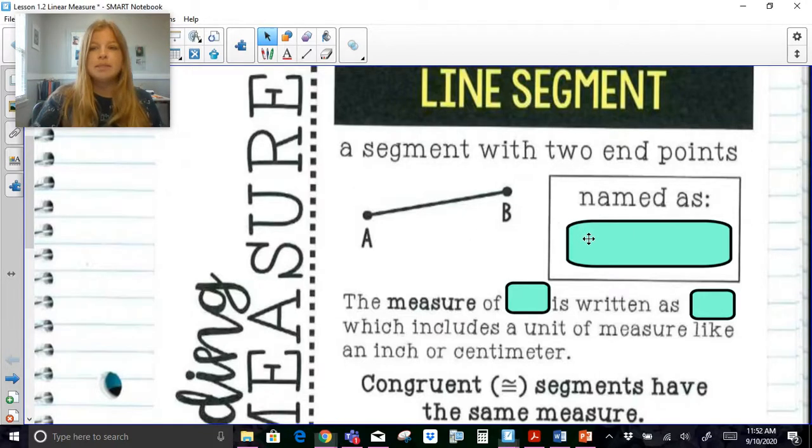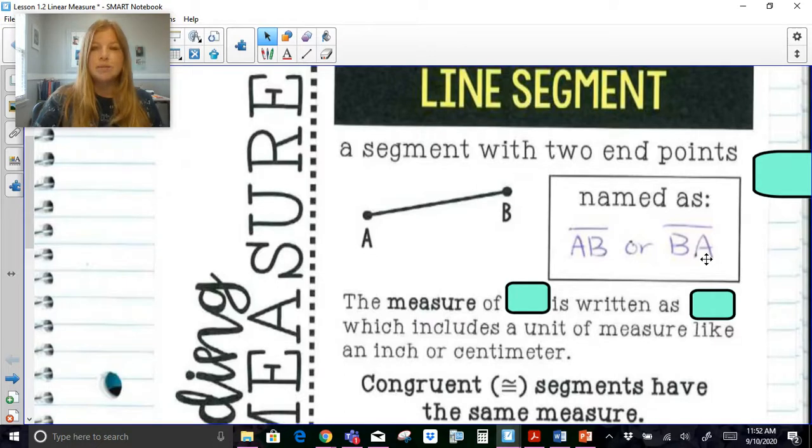So here I would call this segment AB or segment BA and the notation for a segment is simply just a bar across those letters at the top. If I had arrows at either end then it would be a line and if I had one arrow then it would be a ray. So we need to make sure that whenever we're talking about a line segment where we have endpoint to endpoint that this is how we call it and order is not going to matter for us.